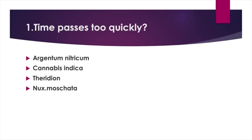Time passes too quickly: Option A. Argentum nitricum. Option B. Cannabis indica. Option C. Tarentula. Option D. Nux moschata. Answer: Option C. Tarentula.